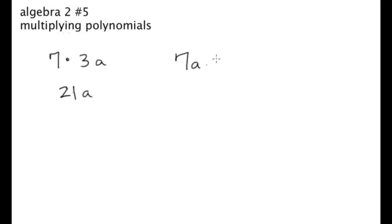And if we do have 7A times 3A like this, the 7 and 3 combine, so it's 21, but the A multiplies with the other A, so it makes an A squared.